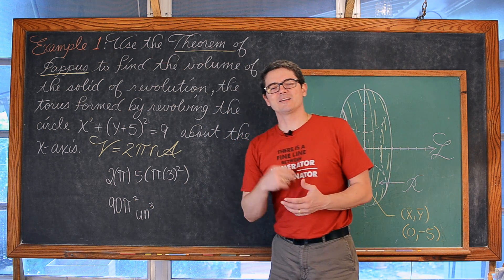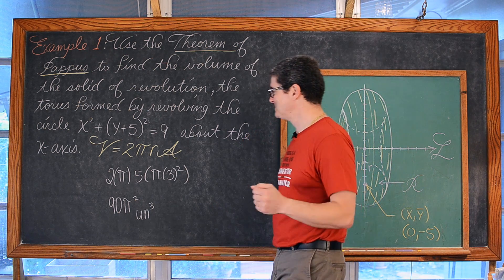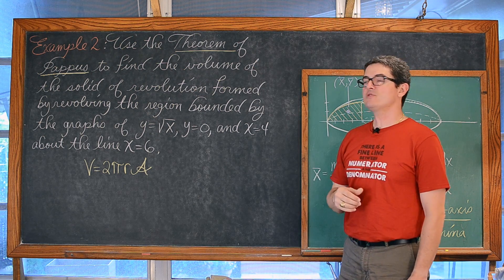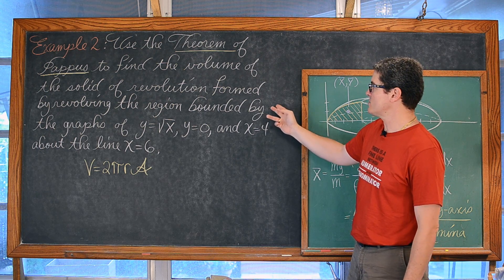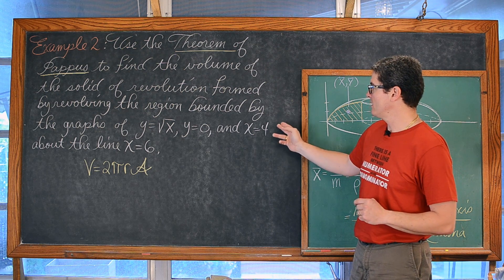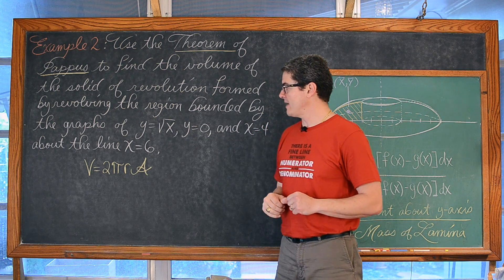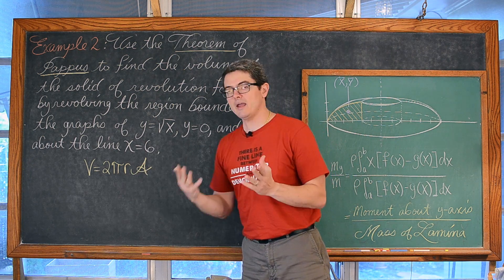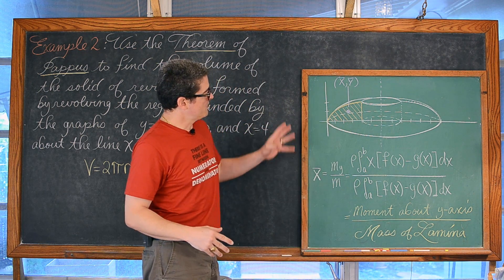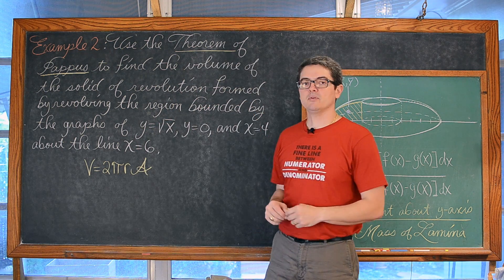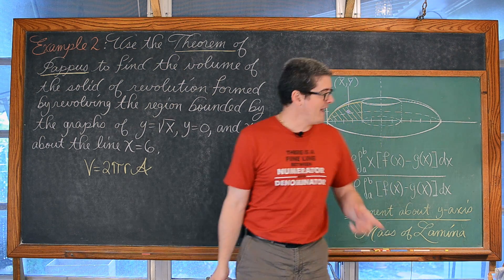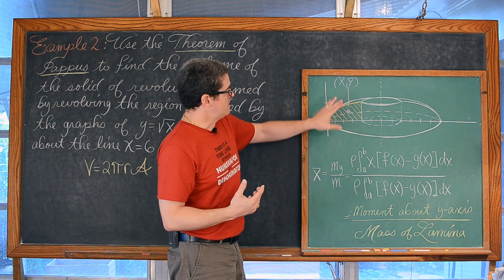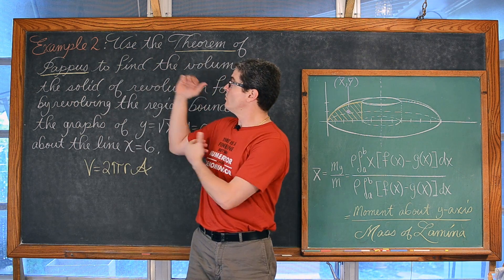Let's get to our second and last example, which requires a lot more calculus. Use the theorem of Pappus to find the volume of the solid of revolution formed by revolving the region bounded by y = √x, y = 0, x = 4, about the line x = 6. We need to know r — the distance between the line and the centroid — and the area of the plane region. Since our axis of rotation is vertical, we need a horizontal distance, so we really only care about x-bar. Just a reminder: x-bar equals Mᵧ, the moment about the y-axis, divided by m, the mass of the planar lamina.